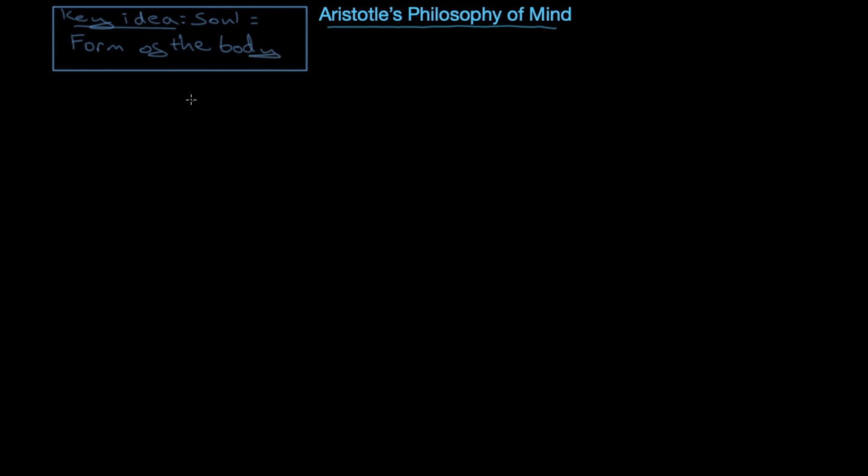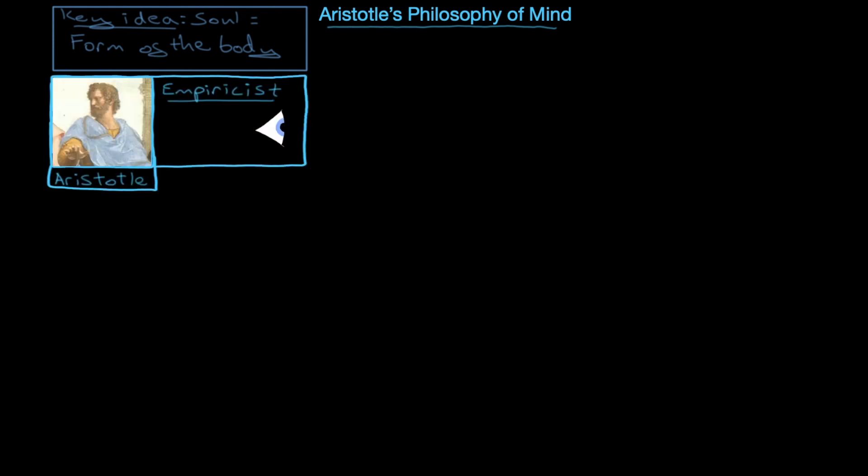The term form here is Aristotle's understanding of the form - it is the kind of shape, singularity, and function of the body. Aristotle himself, remember, was an empiricist, so he thought that you only see things through the senses.